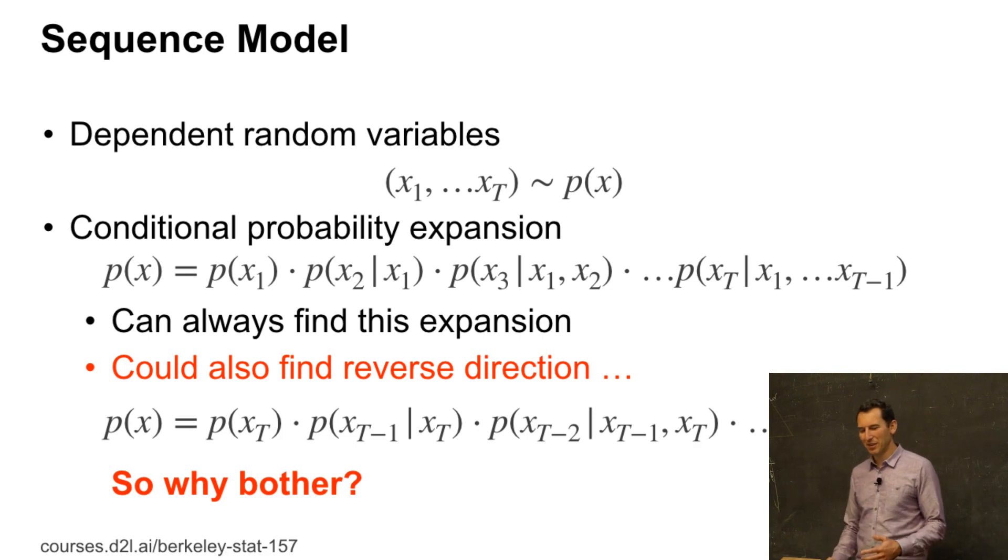Just by writing out conditional probabilities, I can write P of X as P of X1 times P of X2 given X1 times P of X3 given X1 and X2 up to P of XT given X1 through XT minus 1. That I can do no matter whether I have a time series or not. I could also even do that in the reverse direction.